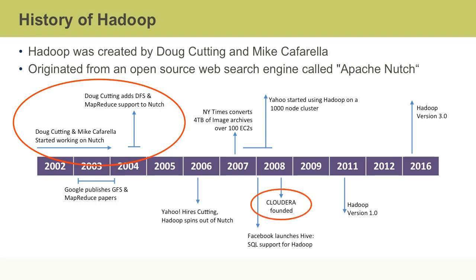In 2008, Cloudera, which is one of the main Hadoop distributors, was founded. In 2011, Hadoop 1.0 was released, and as of January of 2017, the most recent version of Hadoop is 3.0, which was released in September of 2016.